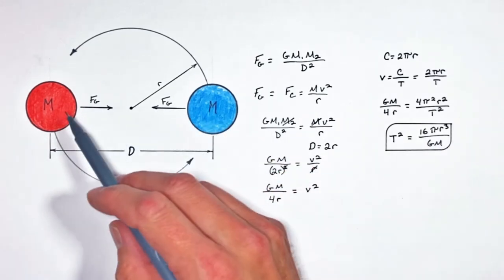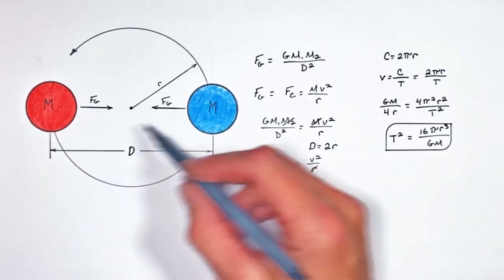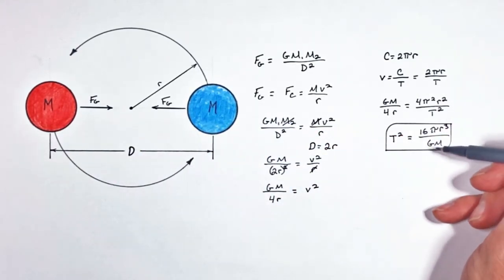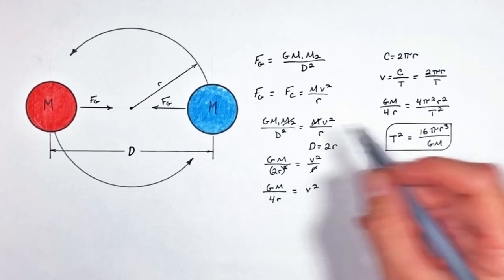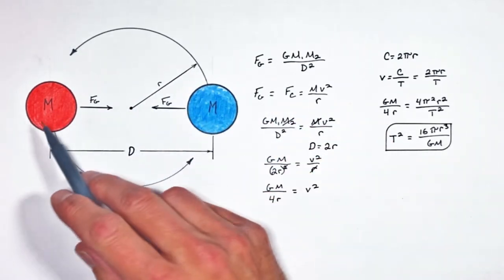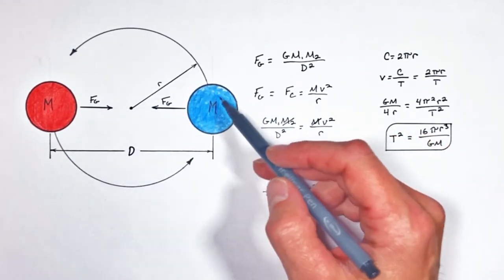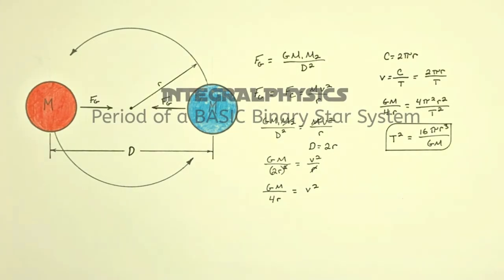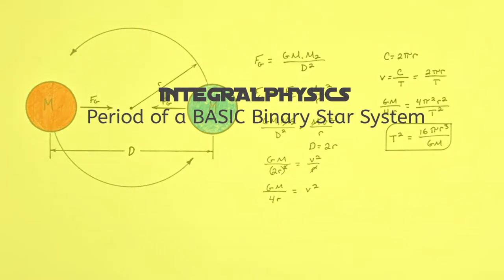Now in the future we'll take a look at what happens when we do things like change these masses so they aren't the same. But this has been how to solve for the period of a binary star system made up of two identical masses in circular orbit. So I hope you found this useful, and on that note, that's all for now.